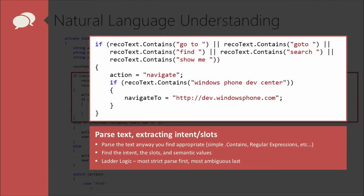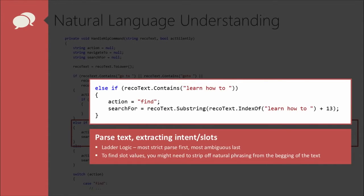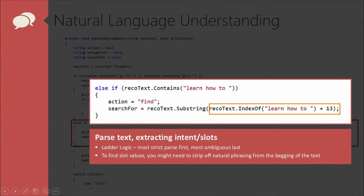In this case, if they said 'go to,' 'find,' 'search,' or 'show me,' then the action is navigate and we navigate to the website. The recotext variable represents exactly what they said. If it contains 'learn how to,' we use indexOf to find the location of that phrase, and the stuff after it is what they want to learn. We grab that and search for it, handling it just as if they had said 'find whatever.'